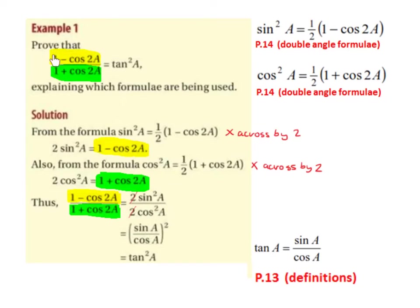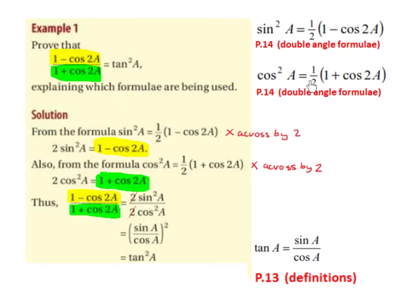Prove that 1 minus cos of 2a divided by 1 plus cos of 2a is equal to tan squared a. To work this out, we're going to use the formula on page 14, which is sine squared a equals 1 half times 1 minus cos of 2a, and cos squared a equals 1 half times 1 plus cos of 2a. So these are the double angle formulae.